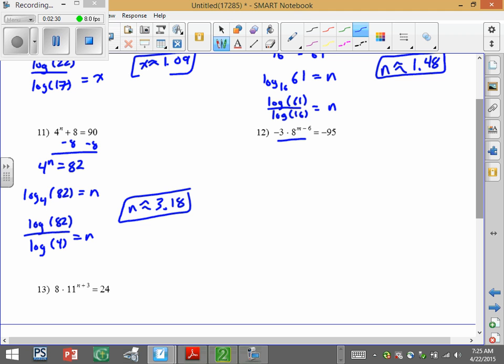Here I need to divide first by negative 3. So we have 8 to the n minus 6 equals negative 95 over 3 is 31.67. Right, again, that's negative 3 times. So make sure you divide by negative 3. Now we've got the exponential isolated, which means we go ahead and take the log. So log base 8, 31.67 equals n minus 6. So this is one where we did a little bit of work. We took the logs.